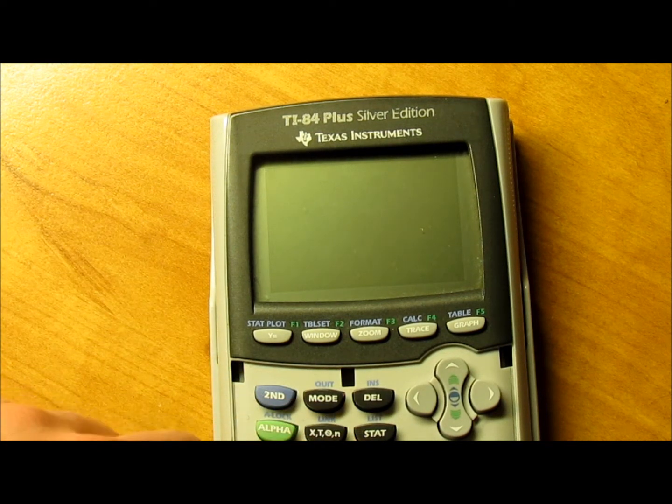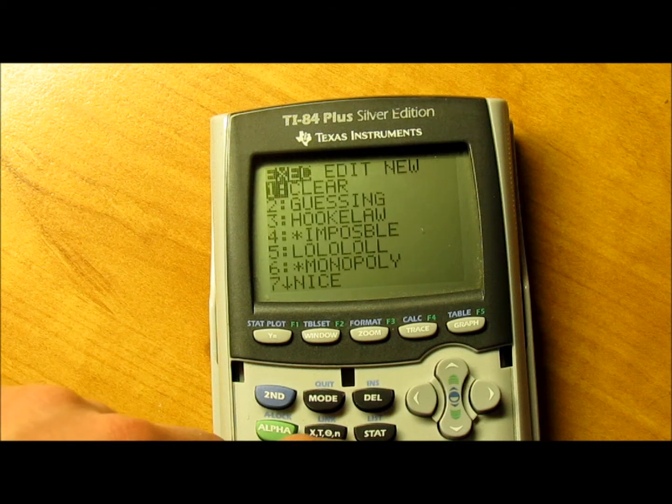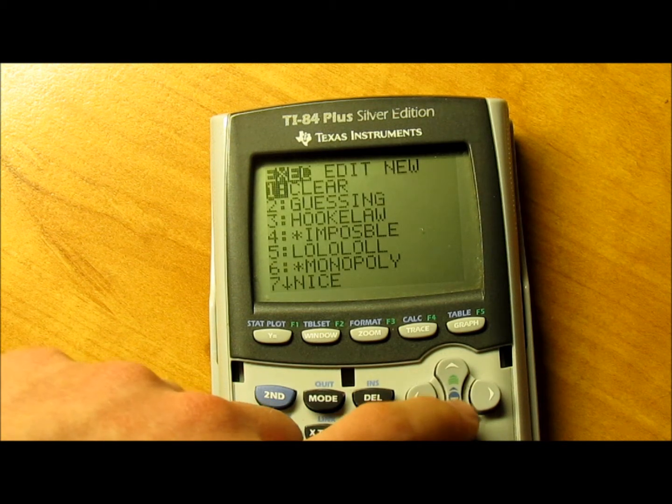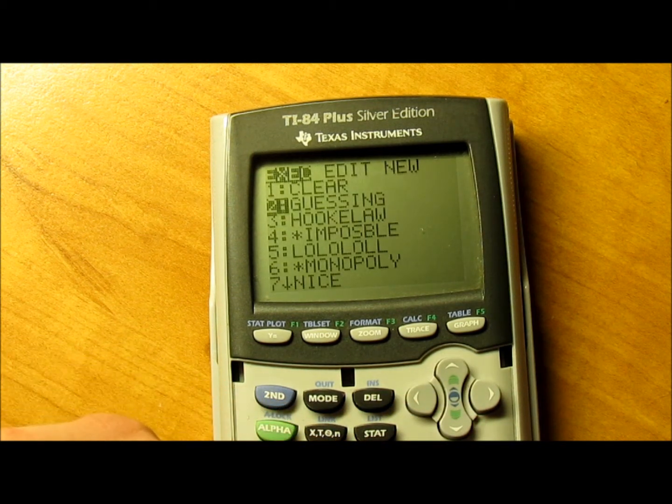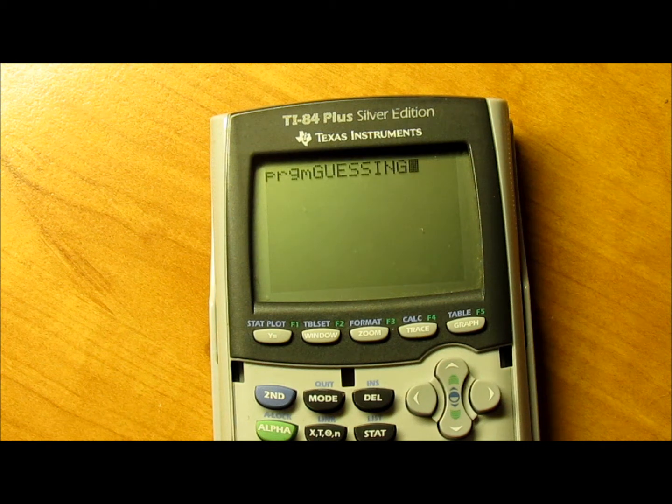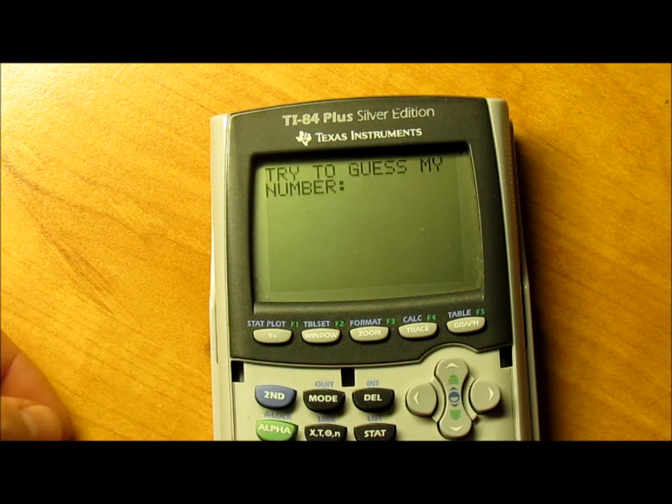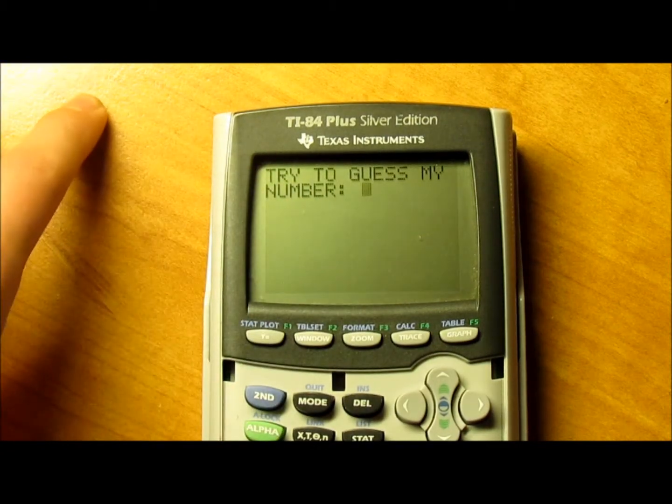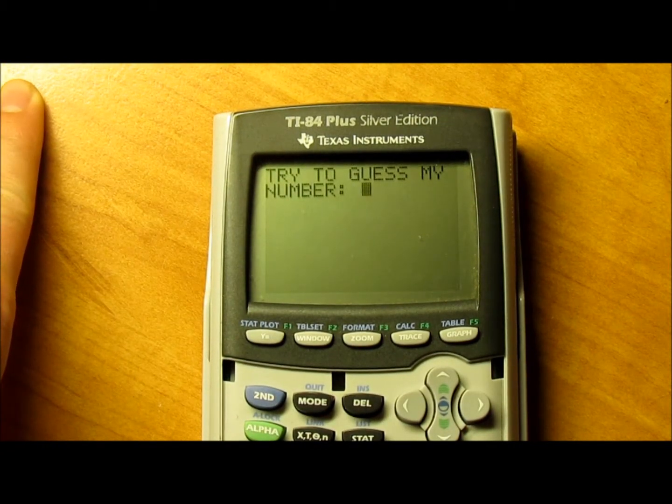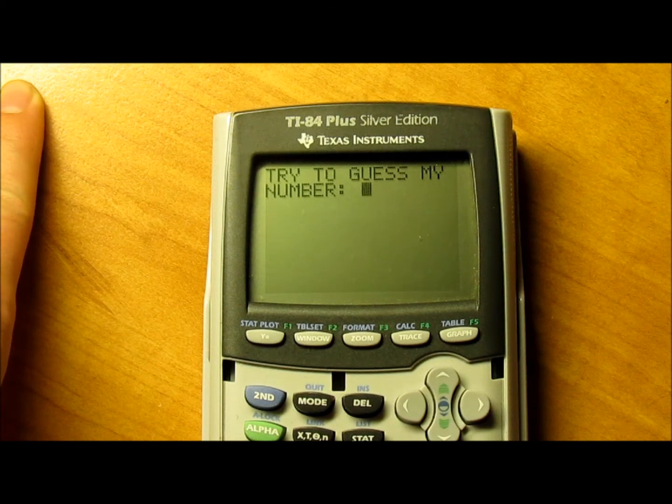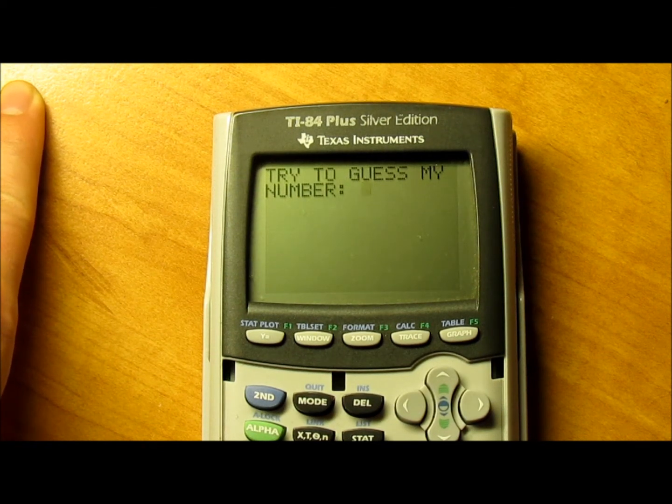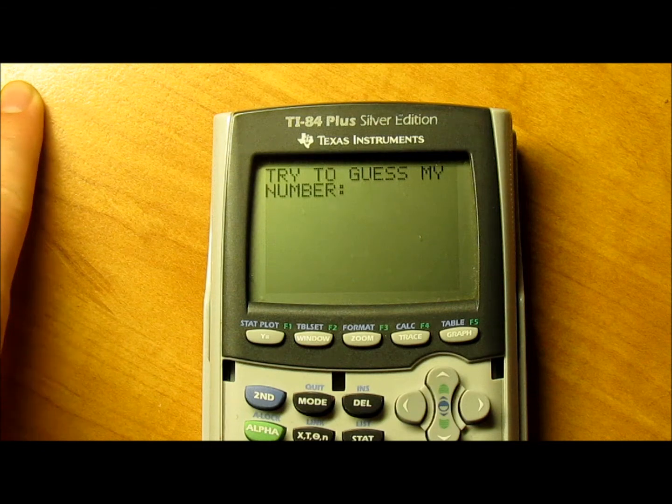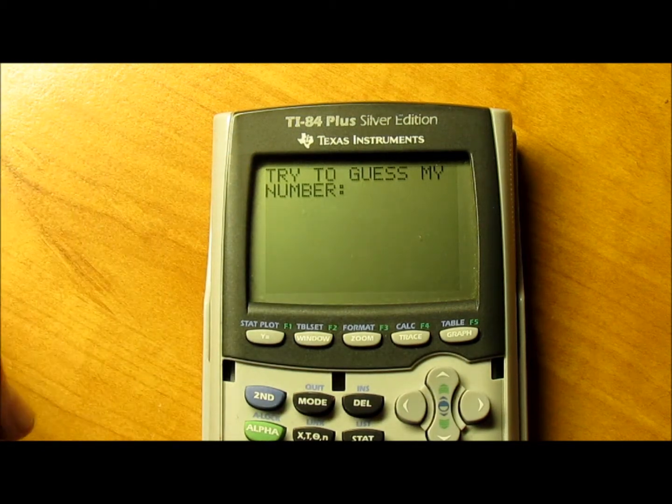Real quick, I'll give you a preview. I have it named Guessing, so we'll go ahead and run it. As you can see, it says try to guess my number. The program picks a random number between 1 and 100. You can change that, and I'll show you where, but for now it picks between 1 and 100.